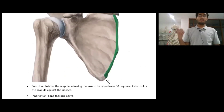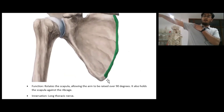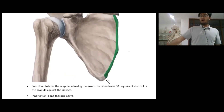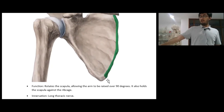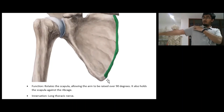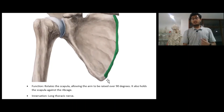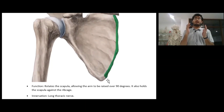The function of the serratus anterior is to rotate the scapula, allowing the arm to be raised — specifically allowing more than 90 degrees of overhead abduction. Abduction is divided into different phases: the initial part is done by the supraspinatus; from there to 90 degrees, abduction is done by the deltoid. When we achieve the 90-degree angle, you can't really move the humerus upwards anymore unless you change the position of the scapula. Two muscles enable the humerus to move upwards: the serratus anterior and the trapezius.